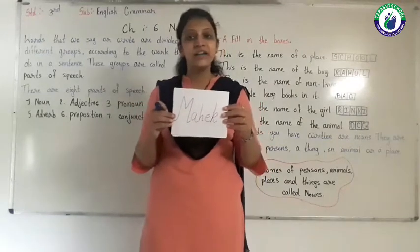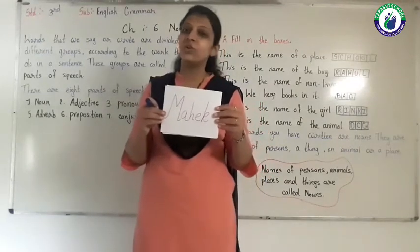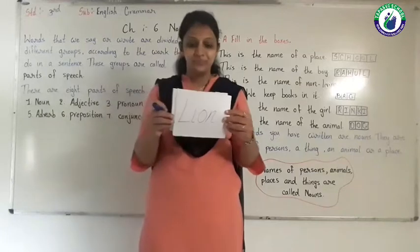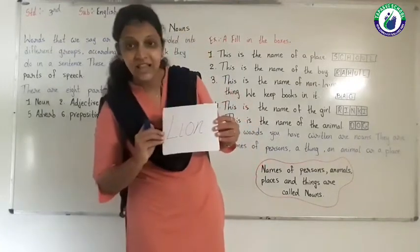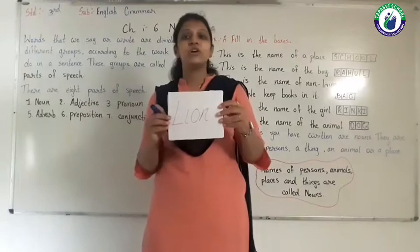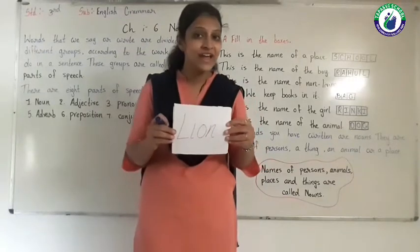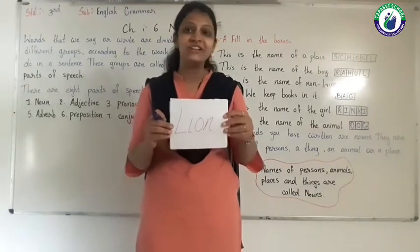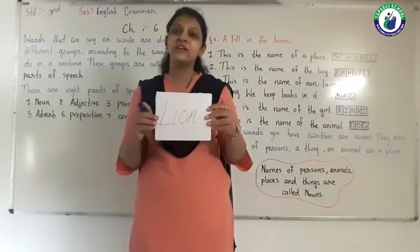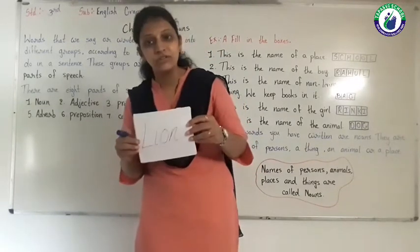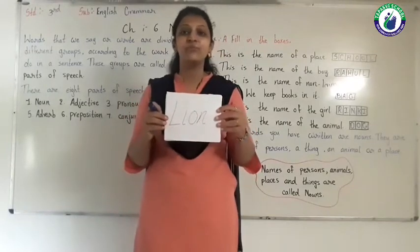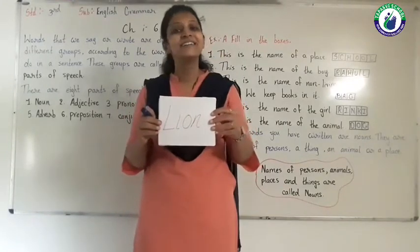So the word Maheg is called a noun. Next: L-I-O-N, lion. So the word lion is the name of an animal. So ultimately animal includes noun — the word lion is called a noun.